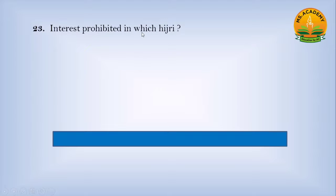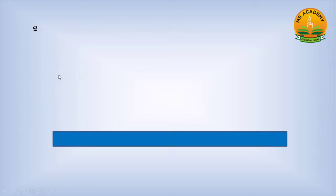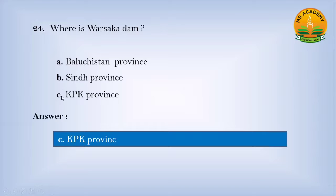Interest was prohibited in which Hijri year? Option A nine Hijri, option B ten Hijri, option C two Hijri — answer is A, nine Hijri. Where is Warsak Dam? Option A Balochistan province, option B Sindh province, option C KPK province (Khyber Pakhtunkhwa) — answer is C, KPK province.